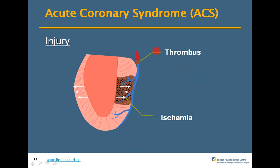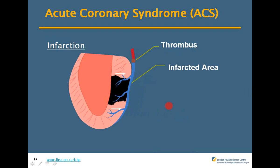With injury, a thrombus is forming and a larger section of the left ventricle is involved in ischemic events. Morphine, nitro, ASA, and O2 should alleviate this. Infarction is where the black area shows total occlusion in the left coronary artery — the entire area is not being perfused and tissue death is occurring. This is a big MI.